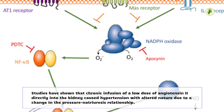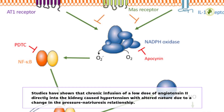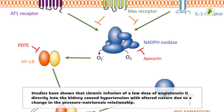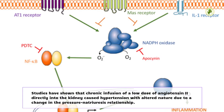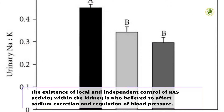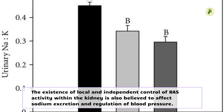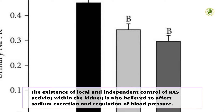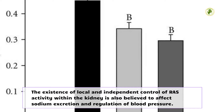Studies have shown that chronic infusion of a low dose of angiotensin II directly into the kidney caused hypertension with altered sodium handling due to a change in the pressure-natriuresis relationship. The existence of local and independent control of RAS activity within the kidney is also believed to affect sodium excretion and regulation of blood pressure.